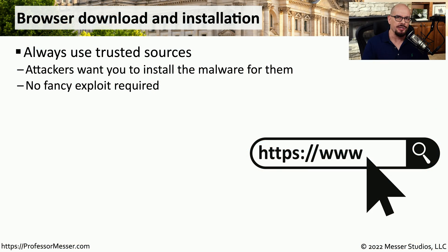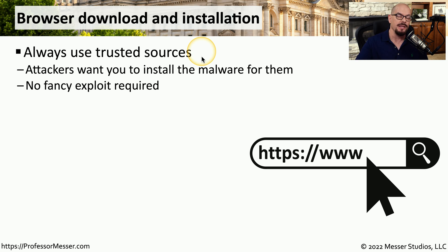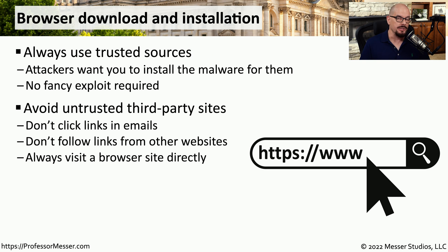The first tip in our browser security video is a best practice that can be used for anything on your system: always use trusted sources when downloading and installing new software. If an attacker wants to infect your system, they'll add malware to a browser extension, and you'll download and enable it in your browser. If you need to install an extension, don't install it from links in an email or from a third-party website — go directly to the browser developer's website.